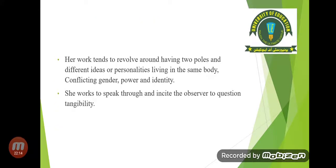Her work tends to revolve around having two poles — different ideas or personalities living in the same body — conflicting gender, power, and identity. She is talking about two contradictory things existing at the same place. For example, if we are talking about positives and negatives, they can't live together in one place. She works to speak through and incite the observer to question tangibility.